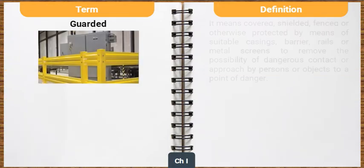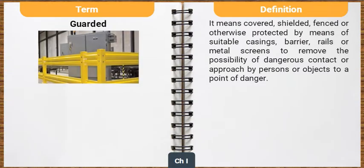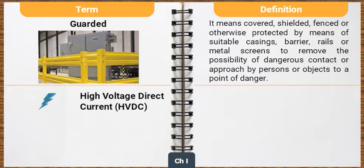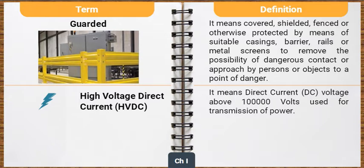Guarded means covered, shielded, fenced, or otherwise protected by means of suitable casings, barrier, rails, or metal screens to remove the possibility of dangerous contact or approach by persons or objects to a point of danger. High Voltage Direct Current (HVDC) means direct current (DC) voltage above 1 lakh volts used for transmission of power.